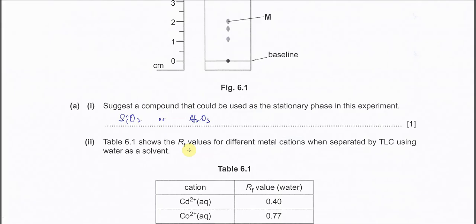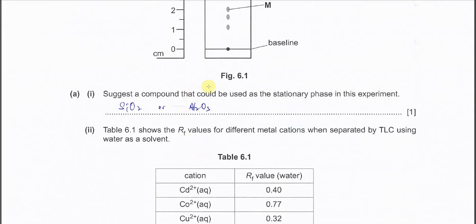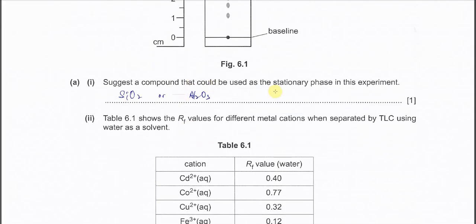Part A1 suggests a compound that could be used as a stationary phase in this experiment. TLC normally we will use two compounds, either SiO2 or alumina. Normally we use SiO2 coated on a glass plate.